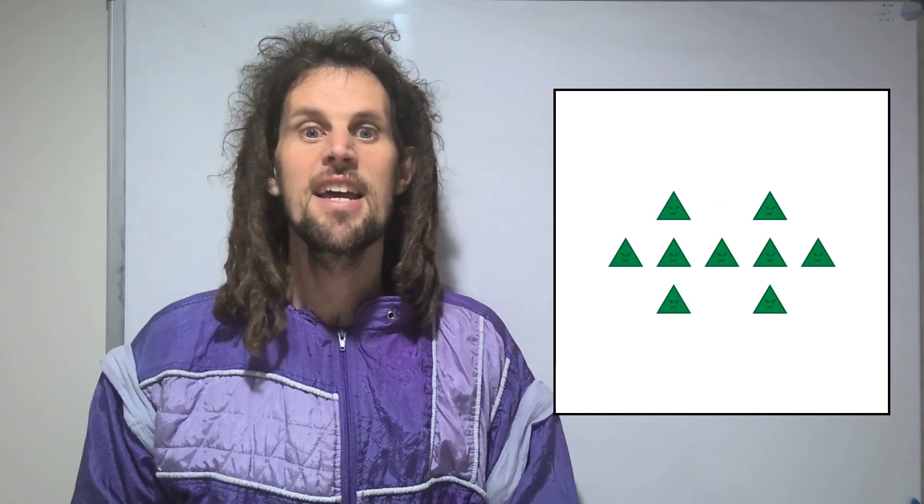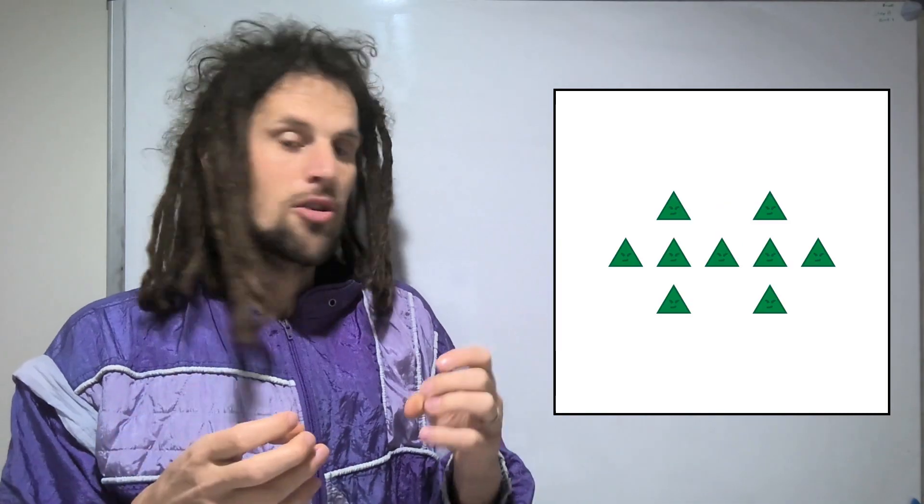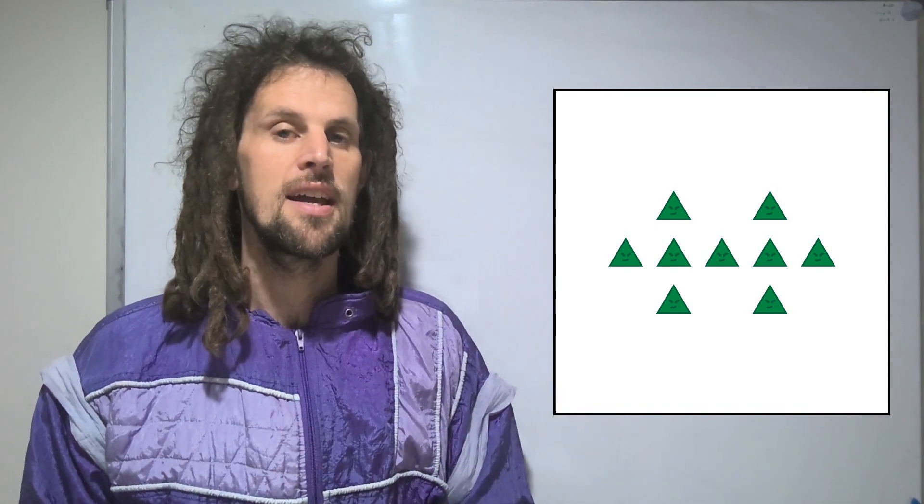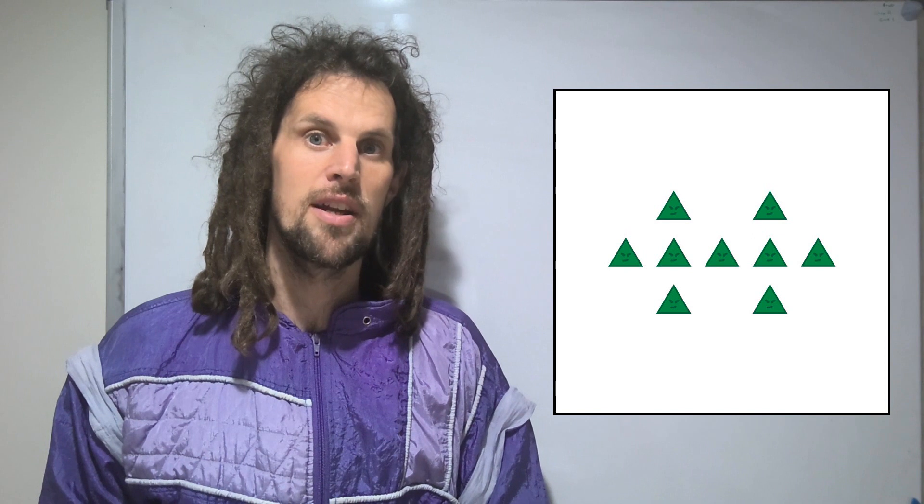And then you move into subitizing and then multiplying as well. So if you look at the triangles here, you can see that there's two groups of five, but they're sharing one in the middle. So there's actually nine triangles there and they have three sides each. So nine threes, 27.